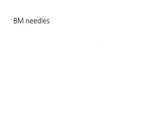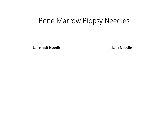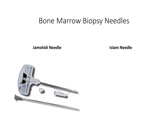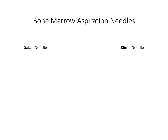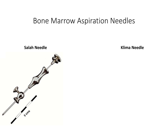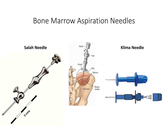Bone marrow biopsy needles are special needles which are stout and hard, about 7–8 cm in length, with a well-fitting stilette and an adjustable guard. There are commonly 4 types: the Jamshidi needle, which is most commonly used; the Islam needle; the Salah type; and the Klima type. The Jamshidi and Islam needles are biopsy-type needles, while the Salah and Klima are aspirate-type needles.